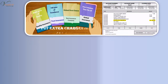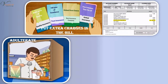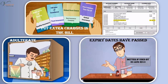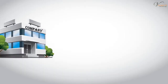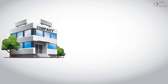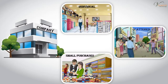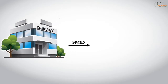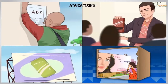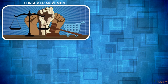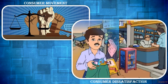Consumers also get cheated when shopkeepers put extra charges in the bill, adulterate the foodstuff they intend to sell, sell defective goods, or sell goods whose expiry dates have passed. Big companies can also manipulate consumers who are individual, scattered, and make small purchases. Big companies spend a lot of money on advertising to give out misleading information about their products. The consumer movement was born out of consumer dissatisfaction.